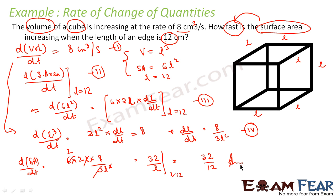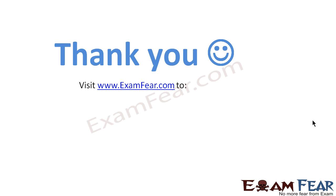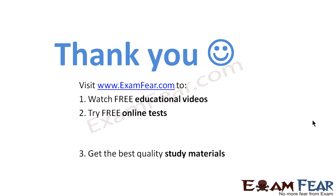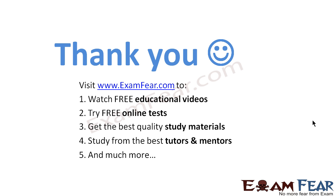So what we did: d(Volume)/dt = 8 was given; we needed d(SA)/dt at l = 12. Using SA = 6l², we got d(SA)/dt = 12l × (dl/dt). We didn't know dl/dt, so from V = l³ we found d(Volume)/dt = 3l² × (dl/dt) = 8, giving dl/dt = 8/(3l²), and thus d(SA)/dt = 32/l = 32/12. Thank you. Visit examfear.com to watch free educational videos, try free online tests, get the best quality study materials, and study from the best tutors and mentors.